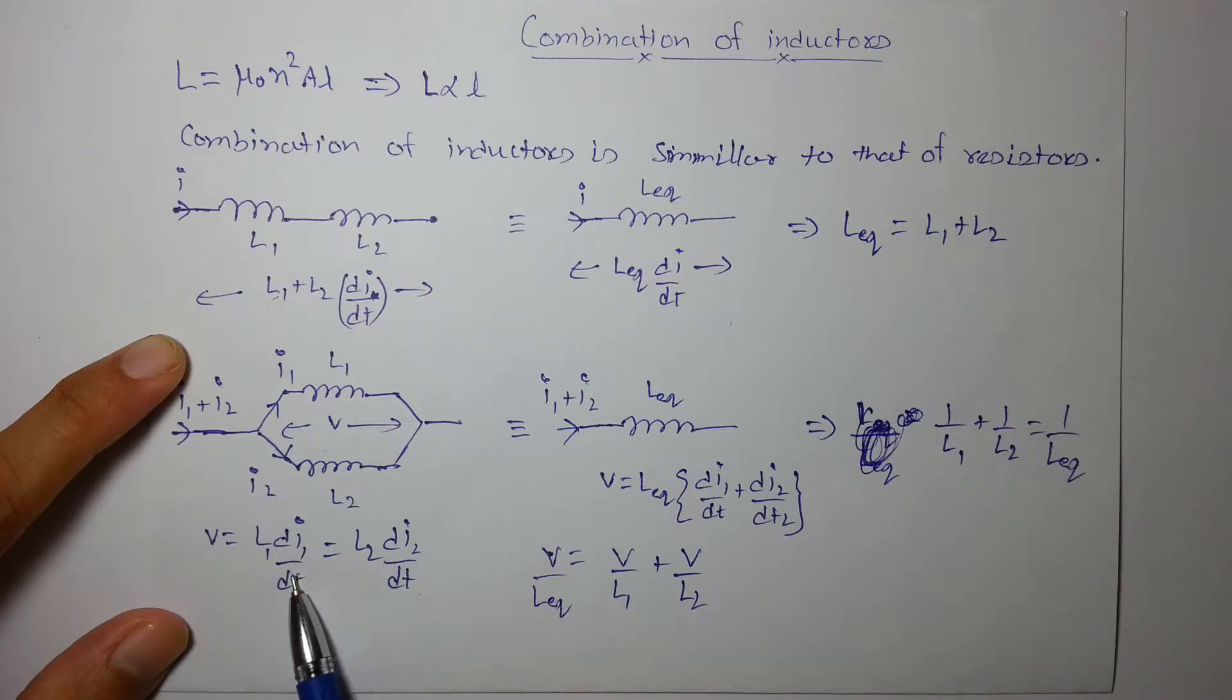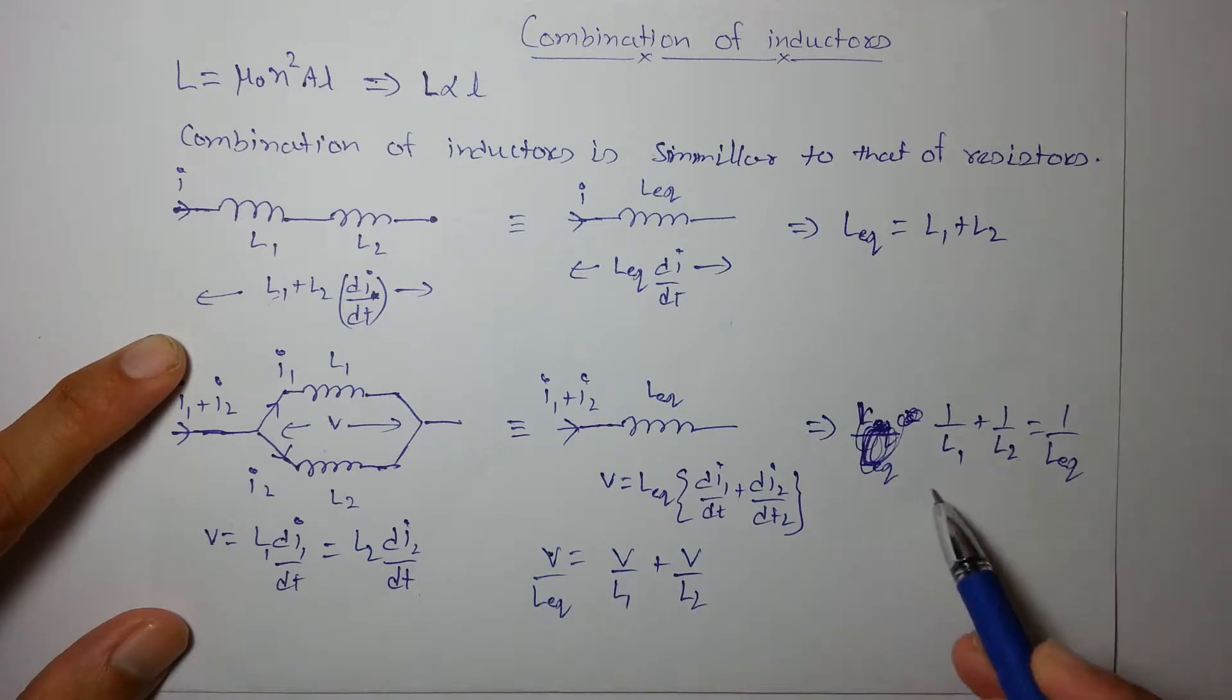Putting the value of dI₁/dt as V/L₁ and dI₂/dt as V/L₂, and just canceling V, we get this equation: 1/L_eq = 1/L₁ + 1/L₂.